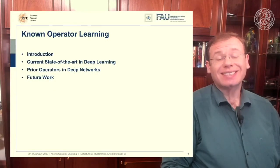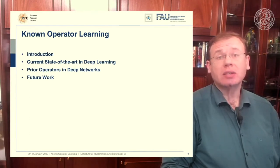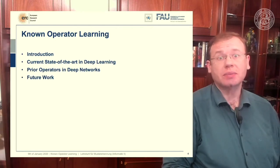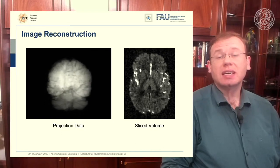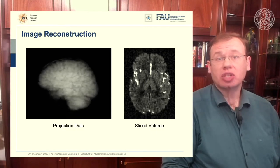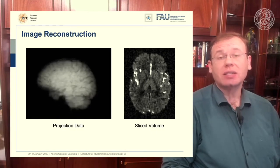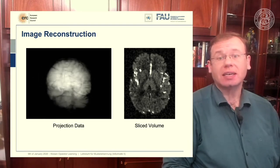But this is generally not the case for all problems, and deep learning is so popular that it's being applied to many different problems other than perceptual tasks. For example, people have been using this to model CT reconstruction, where the problem is that you have a set of projection data shown on the left and you want to reconstruct slice data shown on the right.